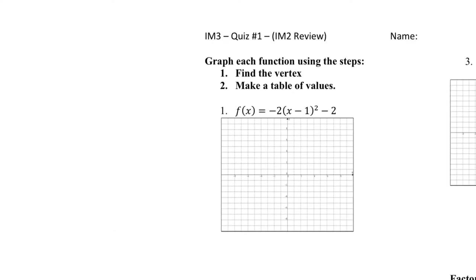So let's start with number 1. It says graph each function using the steps: 1, find the vertex and 2, make a table of values. For number 1, I hope you guys can easily see that it's in vertex form — this is vertex form right here. Since it's in vertex form, I can easily identify h and k.